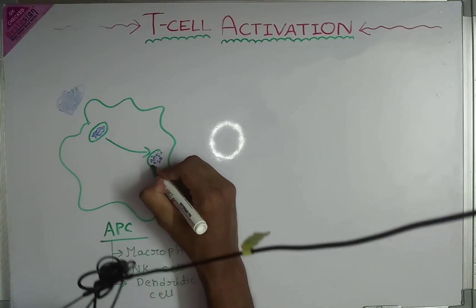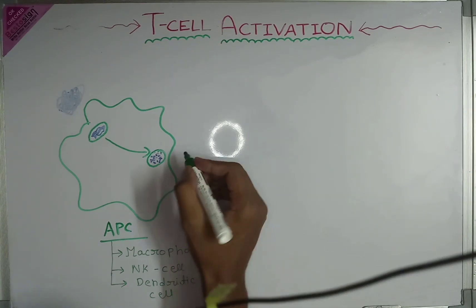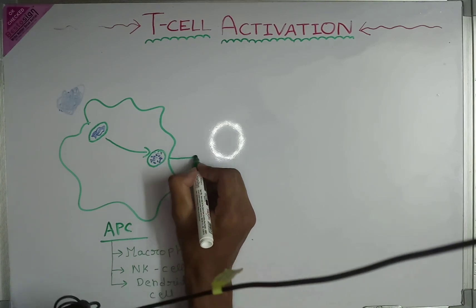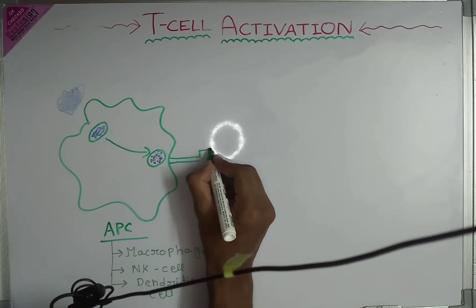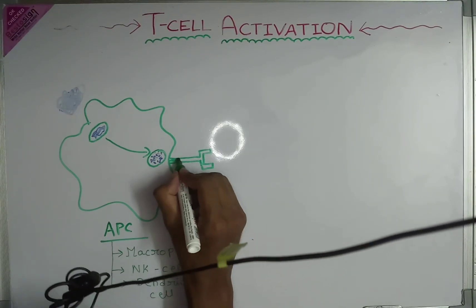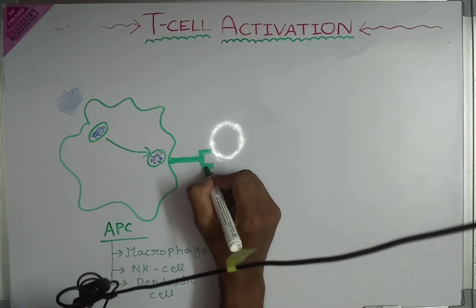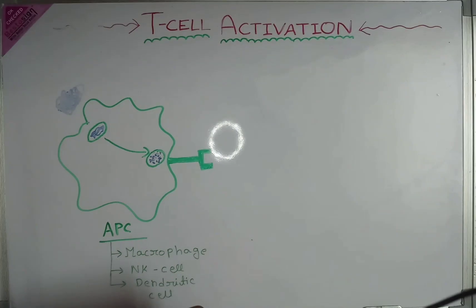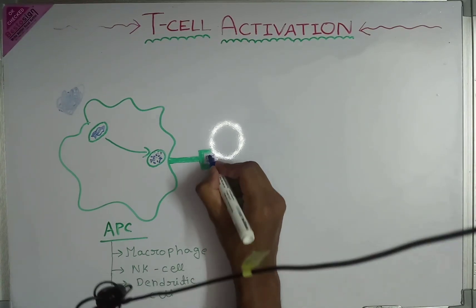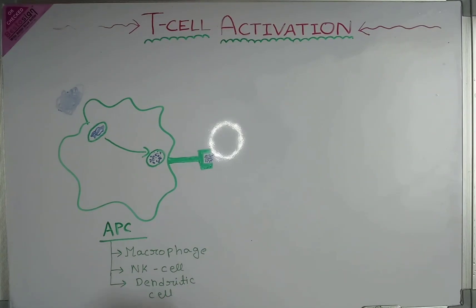Next, the APC cell will express this foreign antigen — now converted into small peptides — on its cell surface through MHC class 2, for further action.